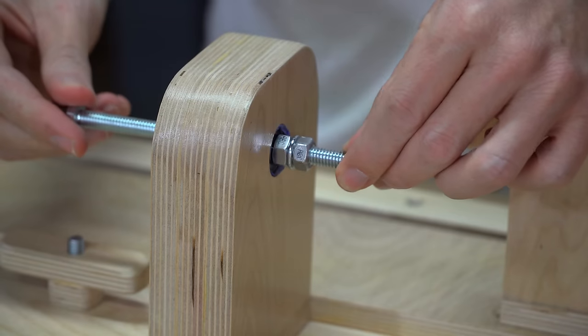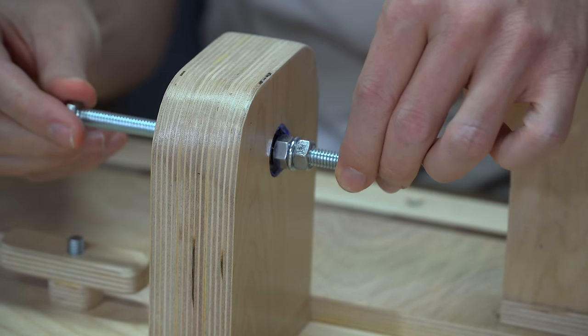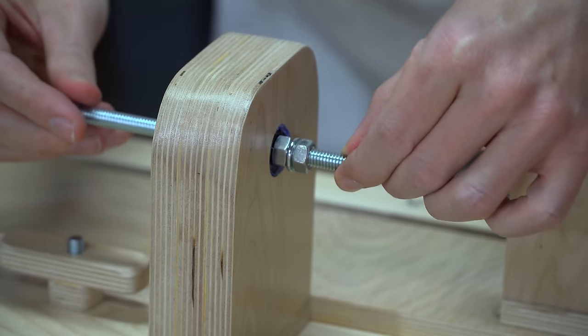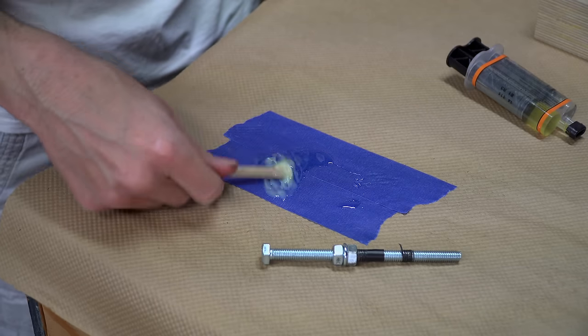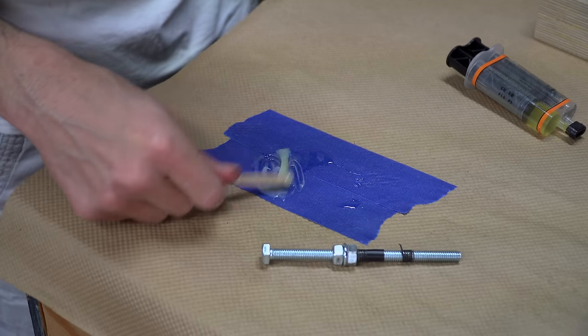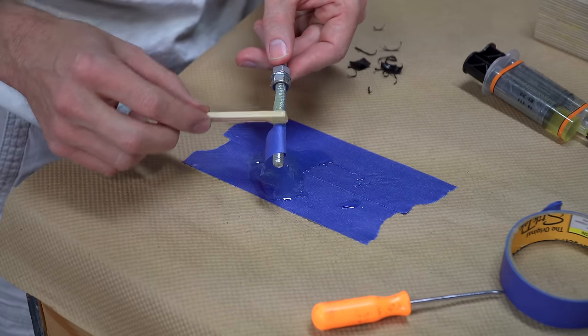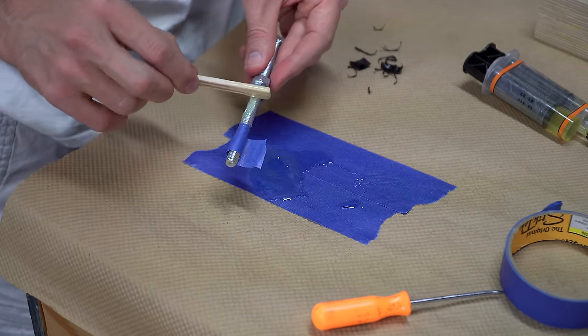There was one thing about the lathe that kept bothering me, and that was the amount of wobble in the headstock and tailstock. This is caused by the fact that a 7/8 inch hole is actually a sloppy fit for a skate bearing, and by the fact that a 5/16-18 rod is a sloppy fit for the center of the bearings.